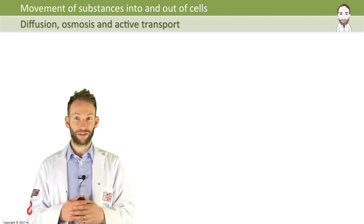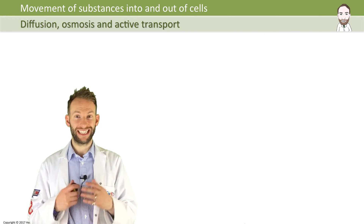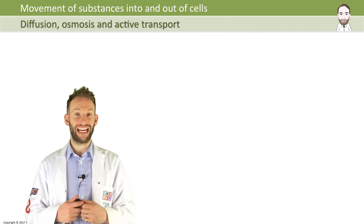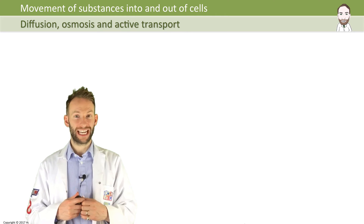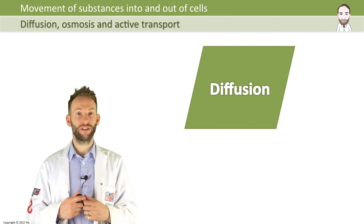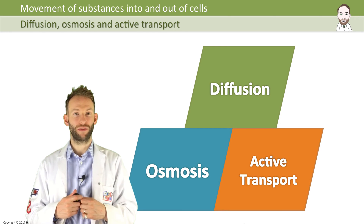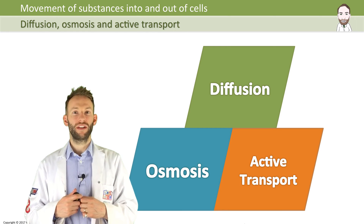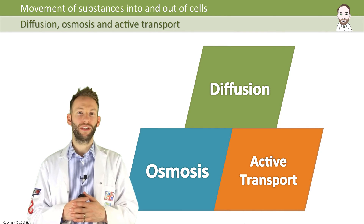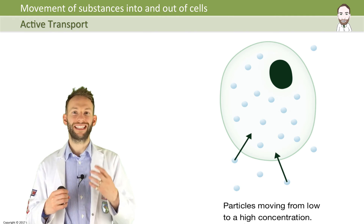In order for cells to carry out the many chemical reactions they need, substances must enter and leave the cell. This happens in three ways: diffusion, osmosis, and active transport.